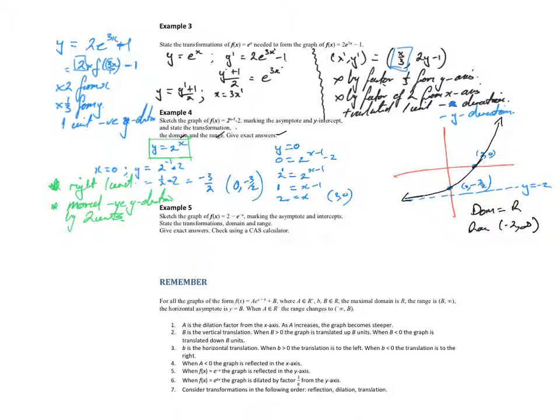State the transformations. Mark asymptotes. Sketch the graph. Let's bring our graph out here. What's the first thing we've got? The graph has got a plus 2, so that's my asymptote. It's moved up 2 units. So we've got y equals 2.